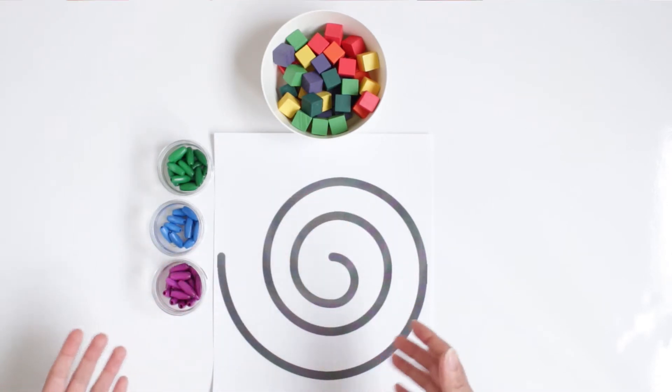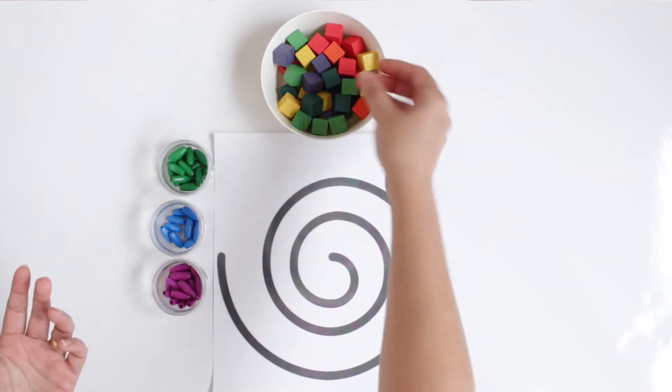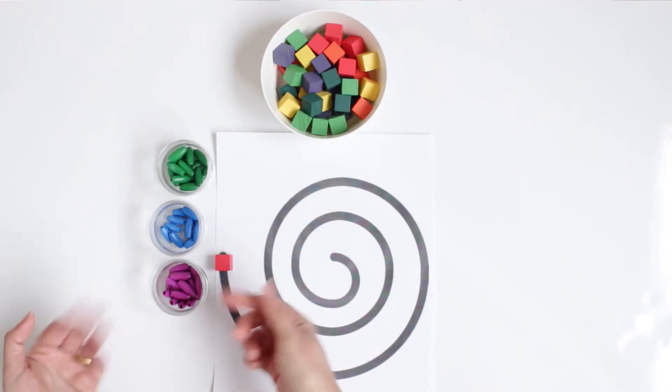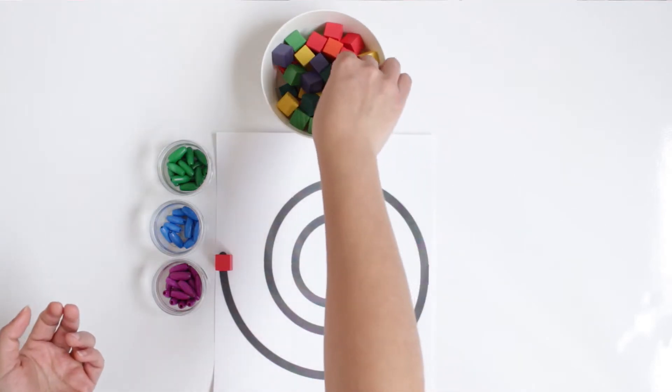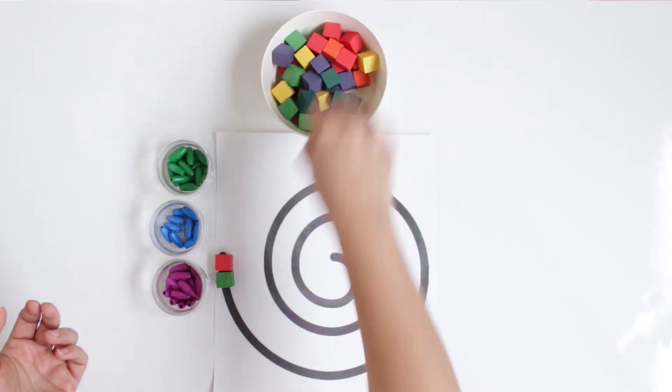The objective of this activity is for the kid to identify a pattern. For example, you can give them a direction. For example, he starts with the red cube, then green, then yellow.